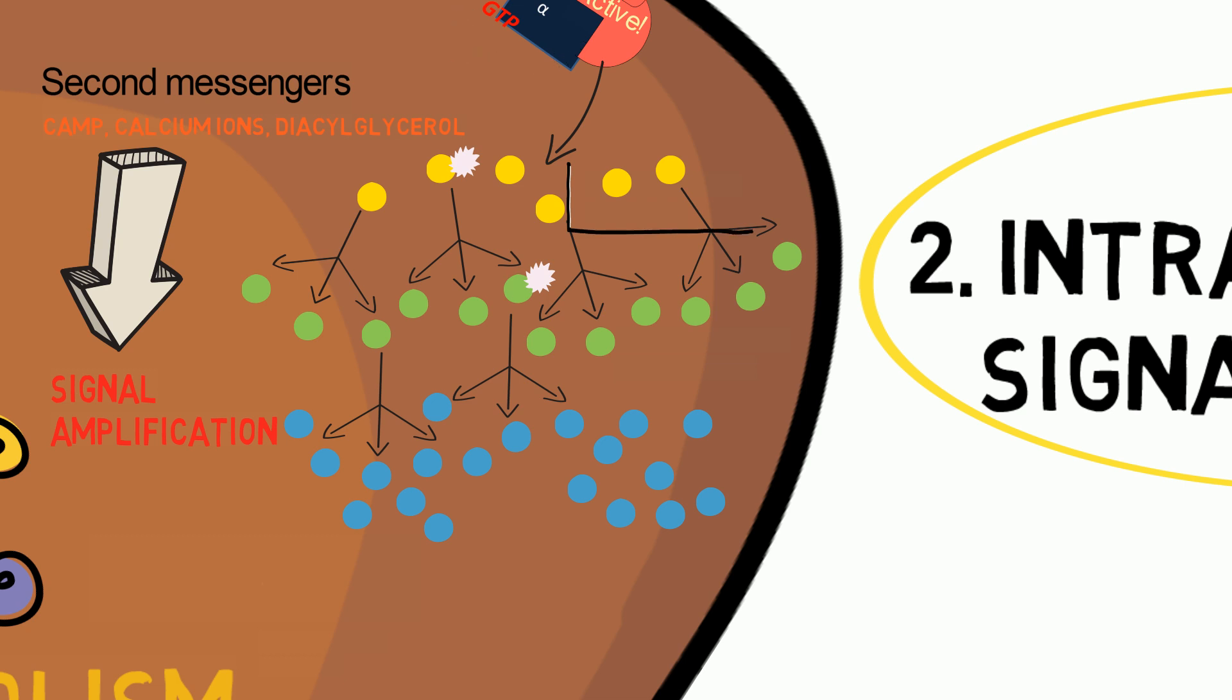The signal is often relayed by phosphorylation of proteins, which is the addition of a phosphate group to the target protein by an enzyme known as kinase.